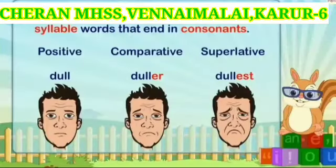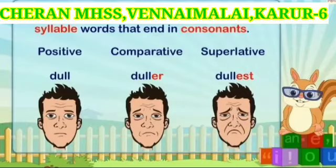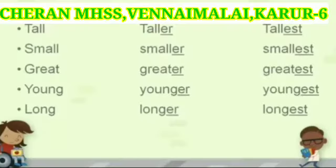In order to form comparative and superlative degrees of adjectives, remember the following rules. Rule 1: We add -er and -est to most one or two syllable words that end in consonants. For example: dull, duller, dullest. See more examples: tall, taller, tallest. In the positive word 'tall', for the comparative we add -er to the end of the word. Similarly, for the superlative degree, we add -est to the end of the word.